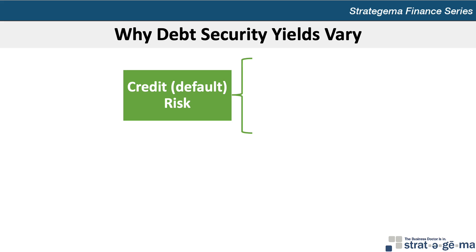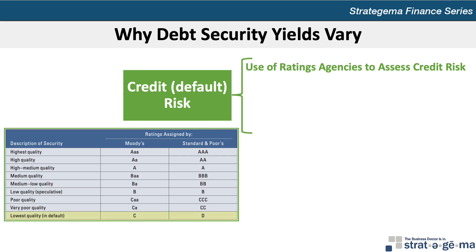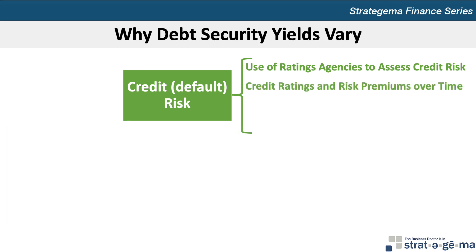Because most securities are subject to the risk of default, investors must consider the creditworthiness of the security issuer. Although investors always have the option of purchasing risk-free treasury securities, they may prefer other securities if the yield compensates them for the credit risk. Investors typically rely on bond ratings provided by agencies such as Moody's or Standard & Poor's, which rate firms and governments that issue debt from low quality, generally rated C or D, up to the highest rated quality of AAA. It's important to note that the ratings issued by the agencies are opinions, not guarantees.